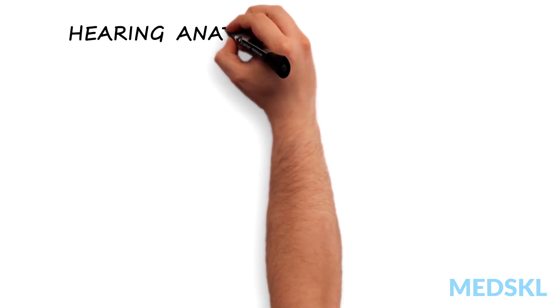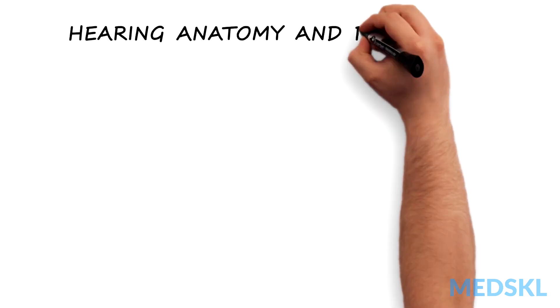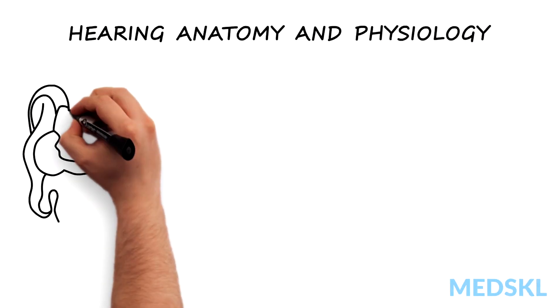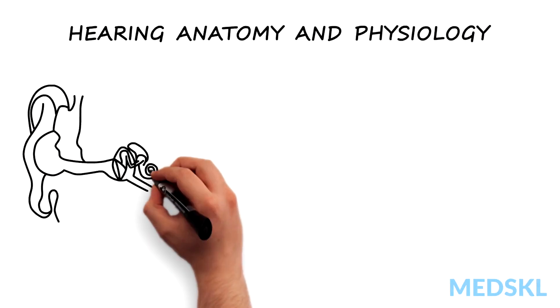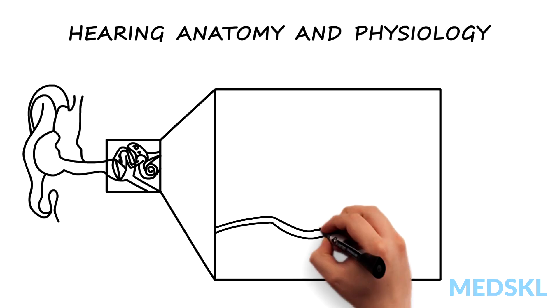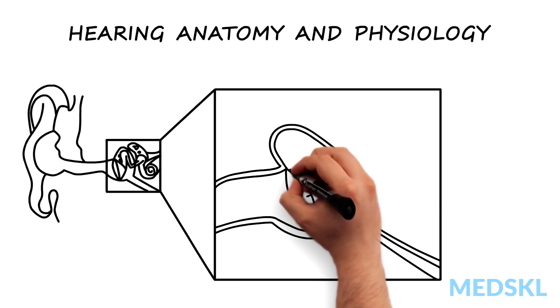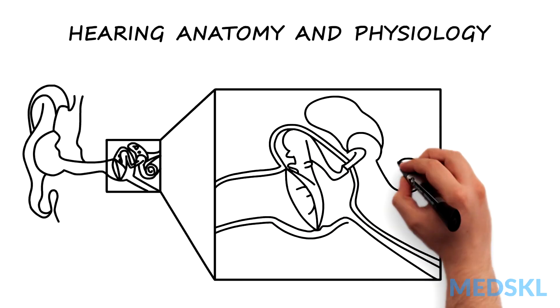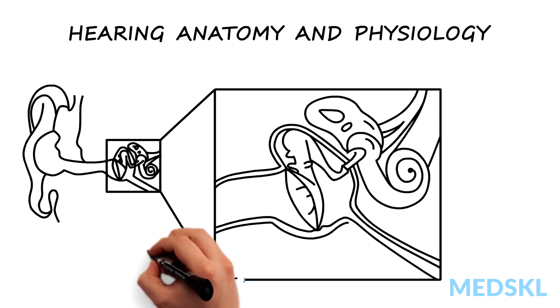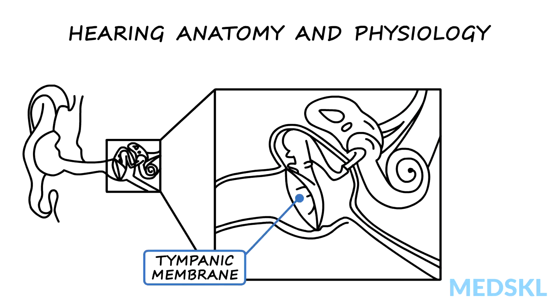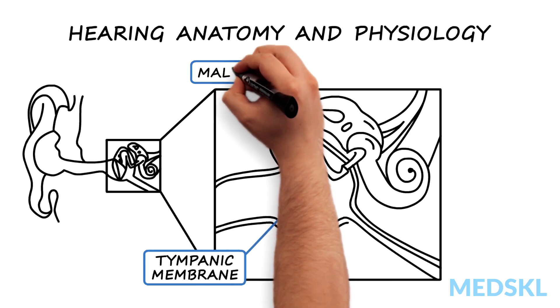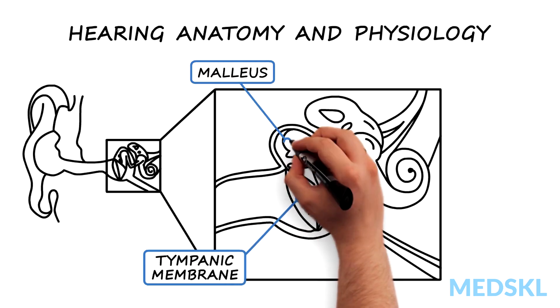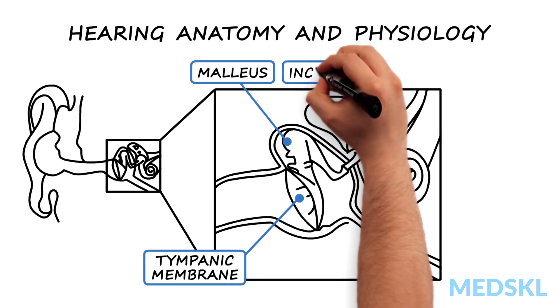Let's begin with a brief overview of hearing anatomy and physiology. Sound travels through the external auditory canal to reach the tympanic membrane, transmitting vibration to the middle ear ossicles.